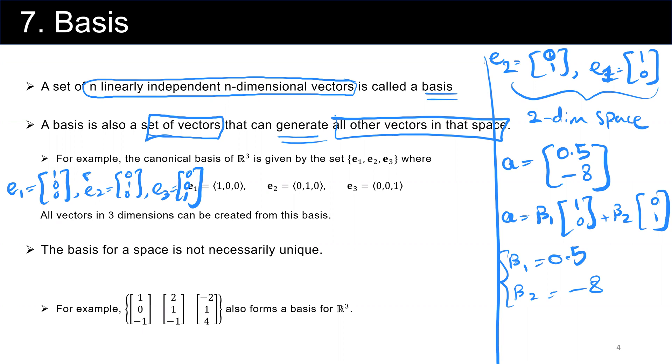What does that mean? All vectors in the three-dimensional space can be created from this basis. Something I want to point out here is the basis for a space is not necessarily unique. Let's look at an example. These A, B, C three vectors are three linearly independent vectors, and they count as a basis for the three-dimensional space.